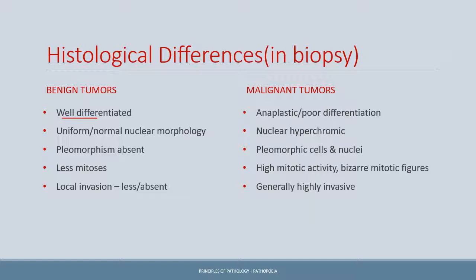Now let's discuss the histologic differences between benign and malignant tumors. Benign tumors are well differentiated and have no metastatic potential by definition, so they have less mitosis. With less mitosis, the cells become more differentiated, exhibiting normal nuclear morphology with no or minimal pleomorphism. Since these cells have less mitosis, they invade less and their cell number is almost limited, taking a long time to grow.